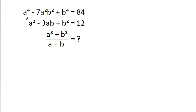In this video, we have given that a⁴ - 7a²b² - b⁴ = 84 and a² - 3ab - b² = 12. Then we have to find the value of a³ - b³ divided by a - b.